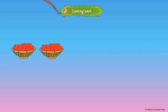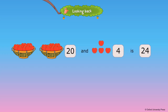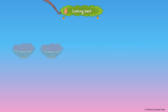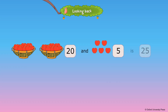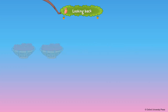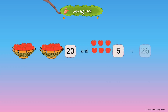If four more apples are added, we will have 24 apples. 20 and 4 is 24. If five more apples are added, we will have 25 apples. 20 and 5 is 25. If six more apples are added, we will have 26 apples. 20 and 6 is 26.